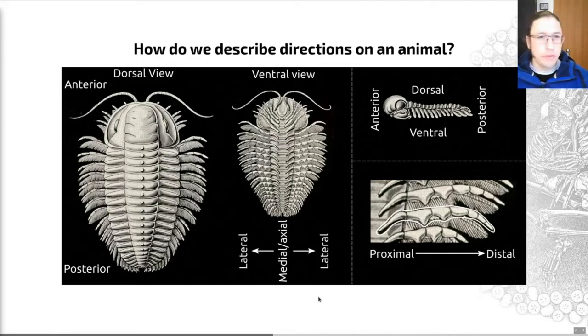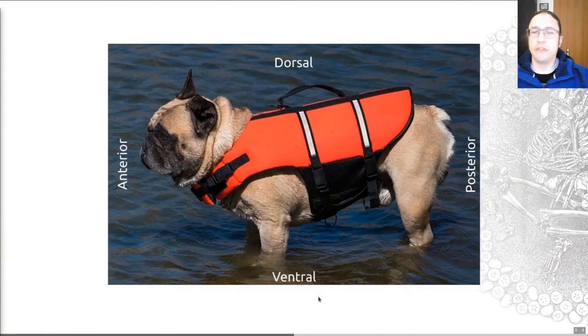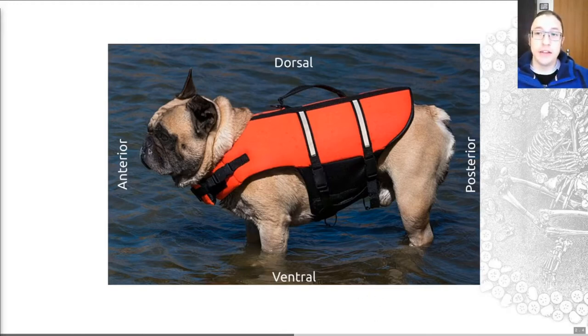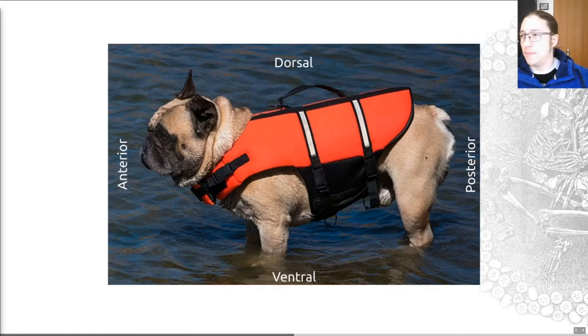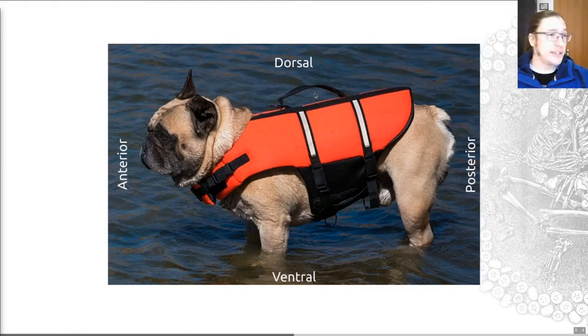So when I was drawing this diagram, I was thinking, well, how do I remember these different orientations whenever I'm trying to think about them? So I provide for you, as an alternative to this magnificent trilobite, this magnificent French bulldog wearing a life jacket. On this French bulldog, you can think of the anterior, the front, as where its head and its kind of squashed nose is. Its posterior is where its semi-tail is and its back legs.